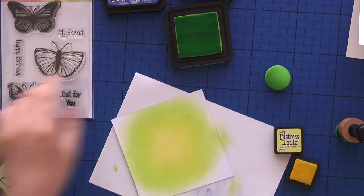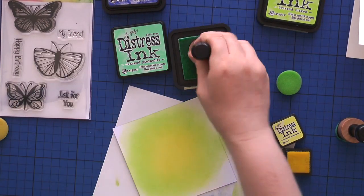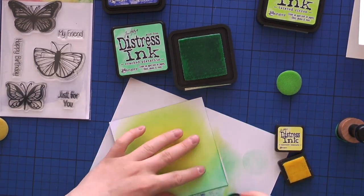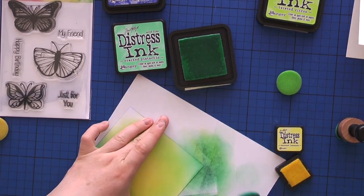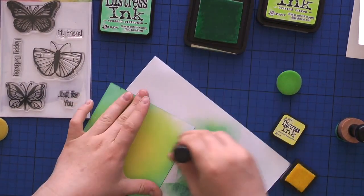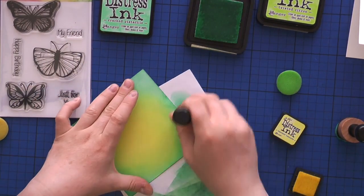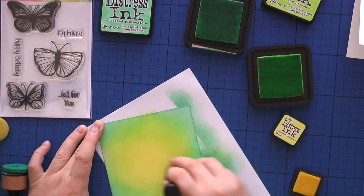I just use a very light hand to apply my ink. Now I'm going in with cracked pistachio on edges, going in kind of heavily, and then I go back to twisted citron and then squeezed lemonade to just nicely blend in all three colors.